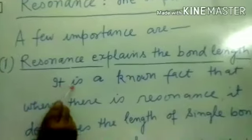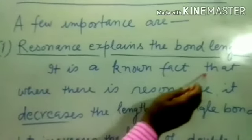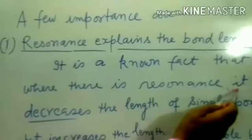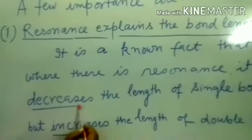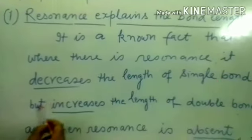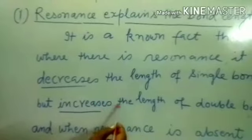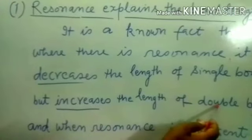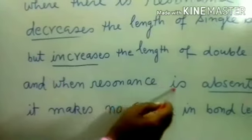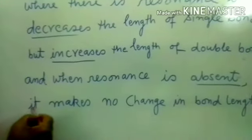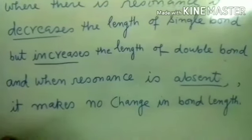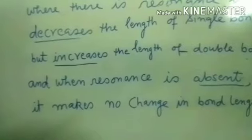It is a known fact that where there is resonance, it decreases the length of single bond but increases the length of double bond. And when resonance is absent, it makes no change in bond length. This is the fundamental principle of bond length.